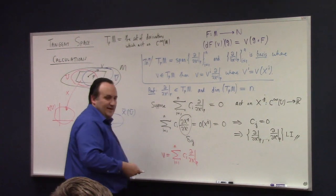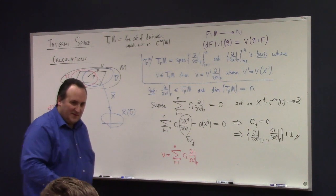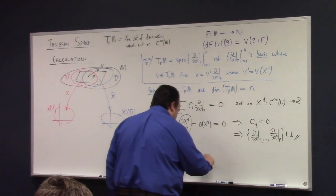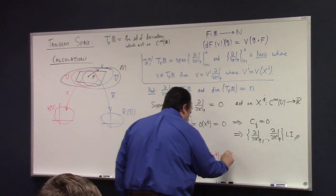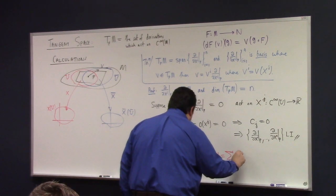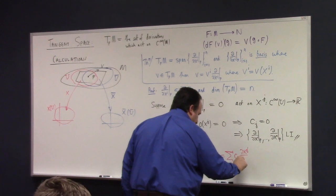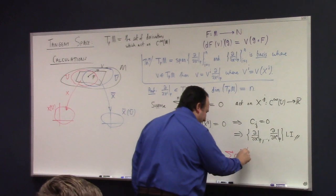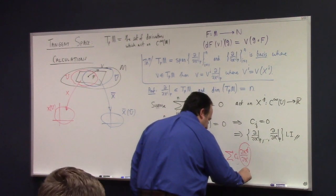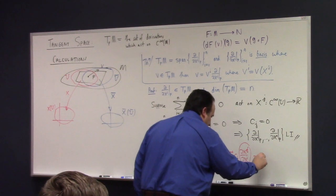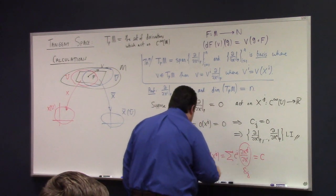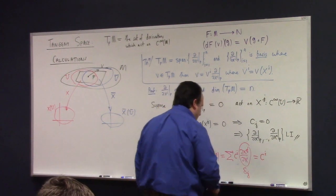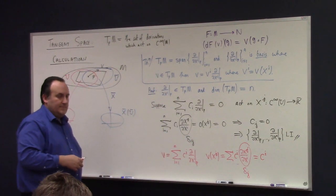How can we calculate c^i? Same thing as the proof of linear independence — act on x^j. So v of x^j equals the sum of c^i times ∂x^j/∂x^i. But this is the Kronecker delta, which makes the sum collapse. The c^i has to exactly be v of x^j.